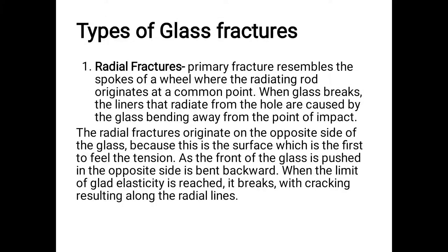When we say types of glass fracture, ito yung mga common fracture na makikita ninyo sa investigation. So the first one is radial. Pag sinabi natin yung radial fracture, makikita mo siya na para siyang spokes of a wheel — yung parang mga wires o mga metal na nasa wheel. And pag nag-break ang glass, ang lines na radiate from the hole are called radial fracture. As the front of the glass is pushed in the opposite side, nagkakaroon siya ng bending backward, and kapag nakuha na yung pinaka-limit niya, saka siya magkakaroon ng radial line.